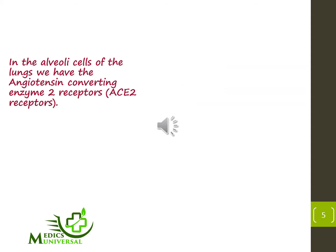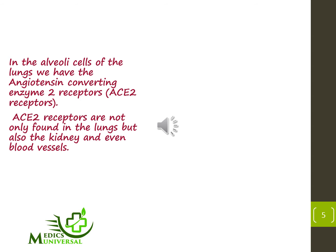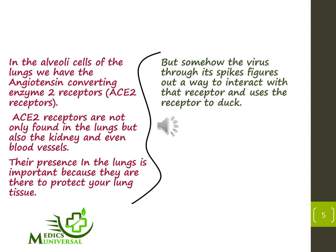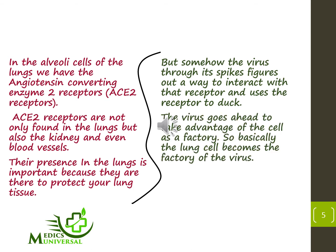In the alveoli of the lungs, we have the angiotensin-converting enzyme 2 receptors, what we call the ACE2 receptors. The ACE2 receptors are not only found in the lungs but also in the kidney and even in the blood vessels. Their presence in the lungs is important because they are there to protect your lung tissue. But somehow the virus, through its spikes, figures out a way to interact with the receptor and uses the receptor to dock.